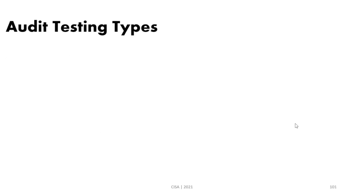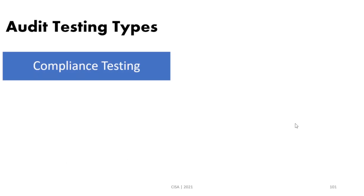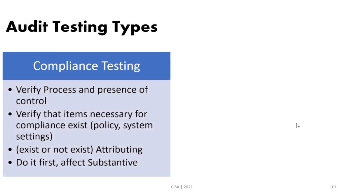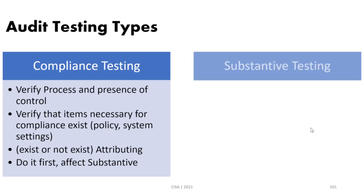When testing controls, there are two types of testing. The first is compliance testing, which is simply verifying the existence or presence of controls. You practically respond to compliance testing by either yes or no — exists or not exists. This is called attribution. We usually do compliance testing first — verifying that items necessary for compliance exist, for instance: is there a firewall? Is there a network access control? Is there a policy?